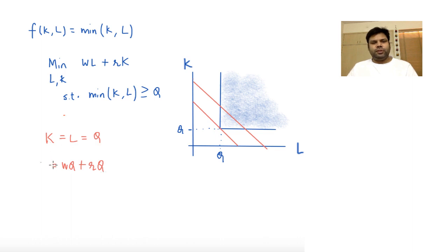The optimal cost function is a function of W, R, and Q, and it is equal to (W + R)·Q.